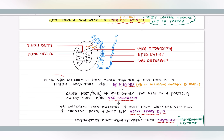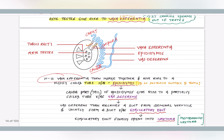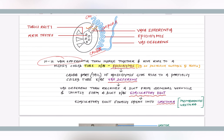Ten to twelve vasa efferentia combine and form a structure known as the epididymis, which is present on the posterior surface of the testis. The epididymis has three parts: the head part is called caput, the body part is called corpus, and the tail part is called cauda.